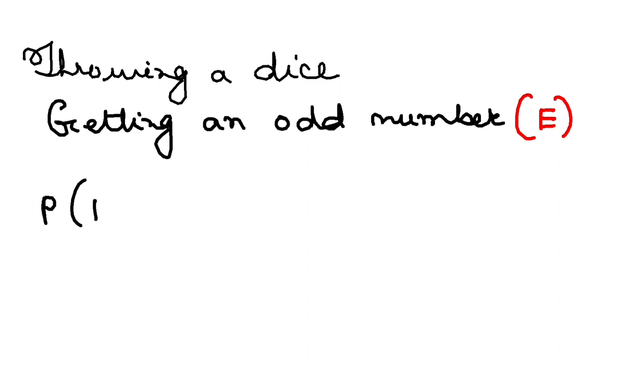So my probability of E or P of E is favorable by total. So if I throw a dice, my total number of outcomes possible: 1, 2, 3, 4, 5, 6, these are possible outcomes. So my total is 6.